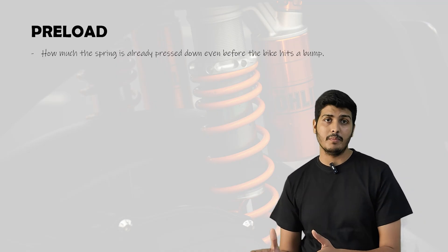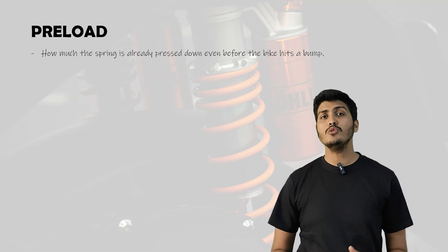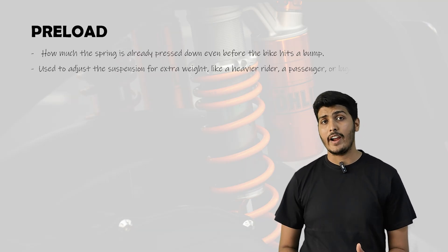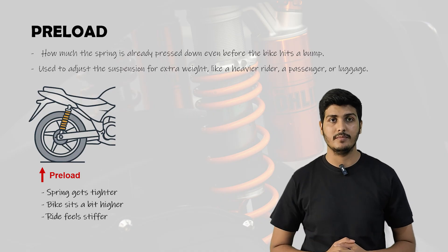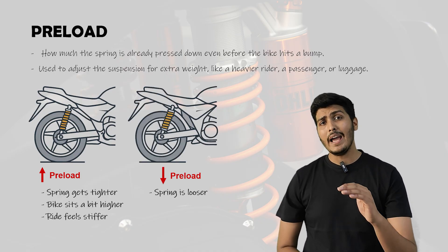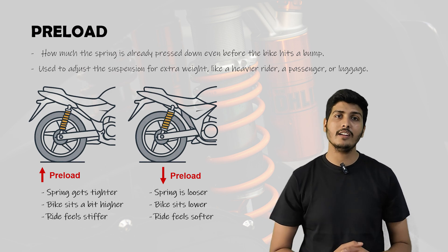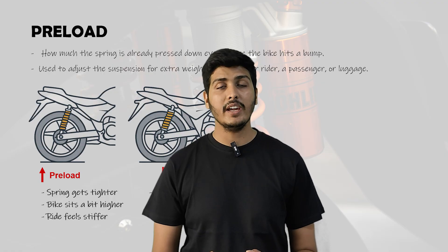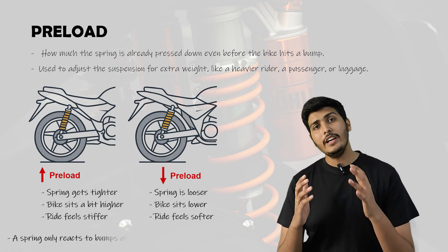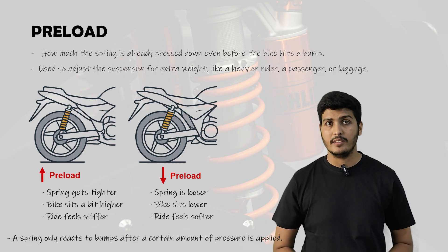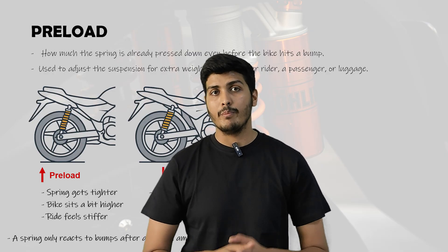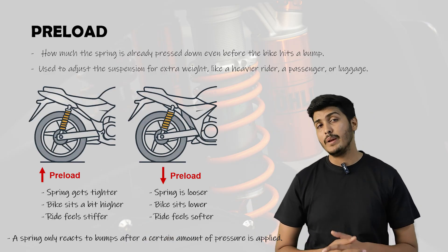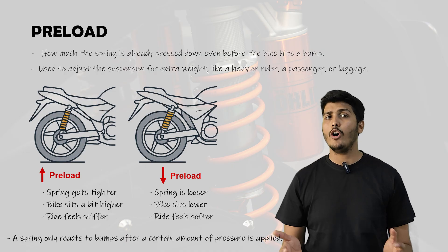Number two is preload. Preload means how much the spring is already compressed before the bike hits a bump — essentially while the bike is just standing still. It is used to adjust the suspension for extra weight like a heavier rider, a passenger or luggage. If you increase the preload, the spring gets tighter, the bike sits a bit higher and the ride feels stiffer. If you decrease the preload, the spring gets looser, the bike sits lower and the ride feels softer and more comfortable. Importantly, preload doesn't change how hard the spring is — it just changes when the spring starts moving. The spring only reacts to a bump after a certain amount of pressure is applied, so increasing preload means small bumps won't compress it further because it's already tight; the spring only starts moving when a bigger force is applied, like a heavier weight or a deeper pothole.